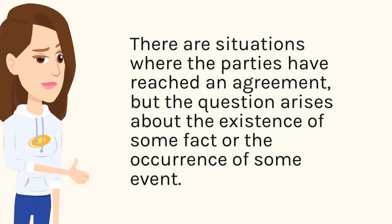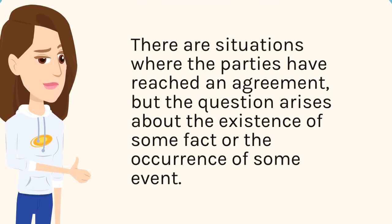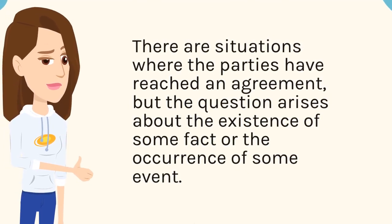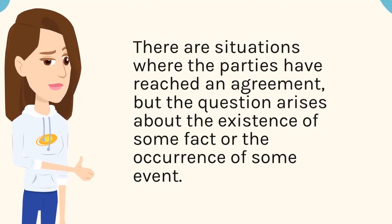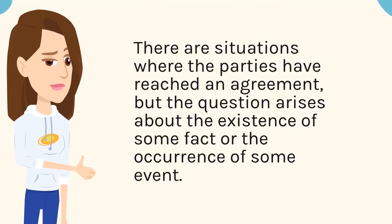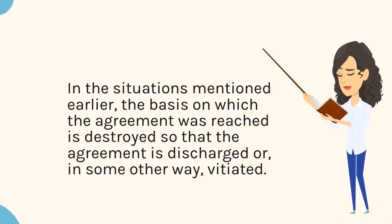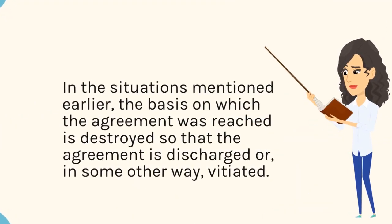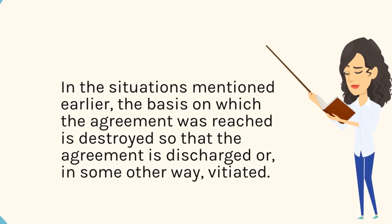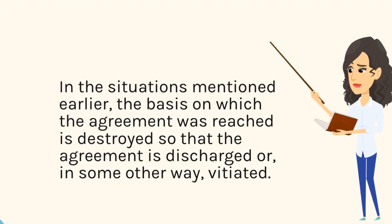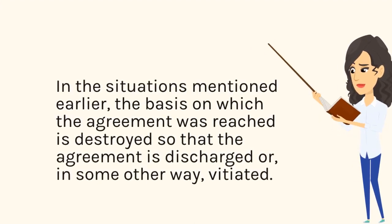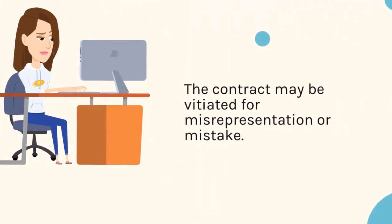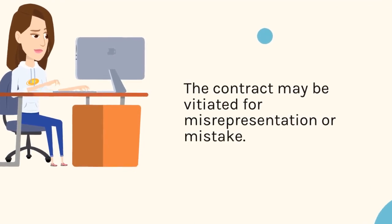There are situations where the parties have reached an agreement, but the question arises about the existence of some fact or the occurrence of some event. In such situations, the basis on which the agreement was reached is destroyed, so that the agreement is discharged or, in some other way, vitiated.